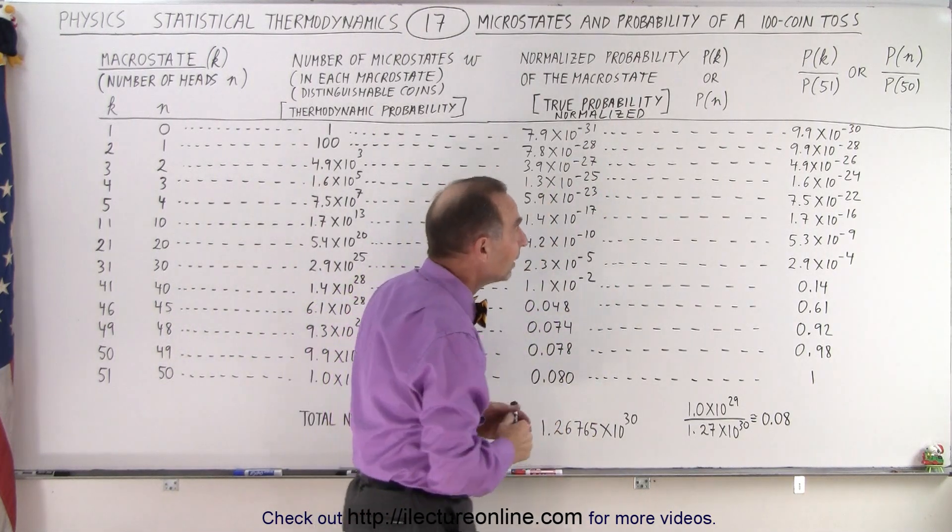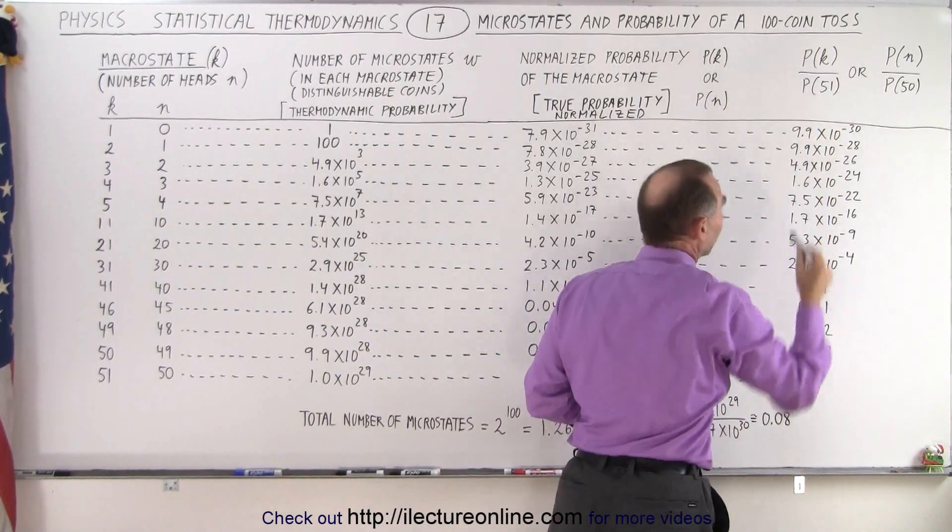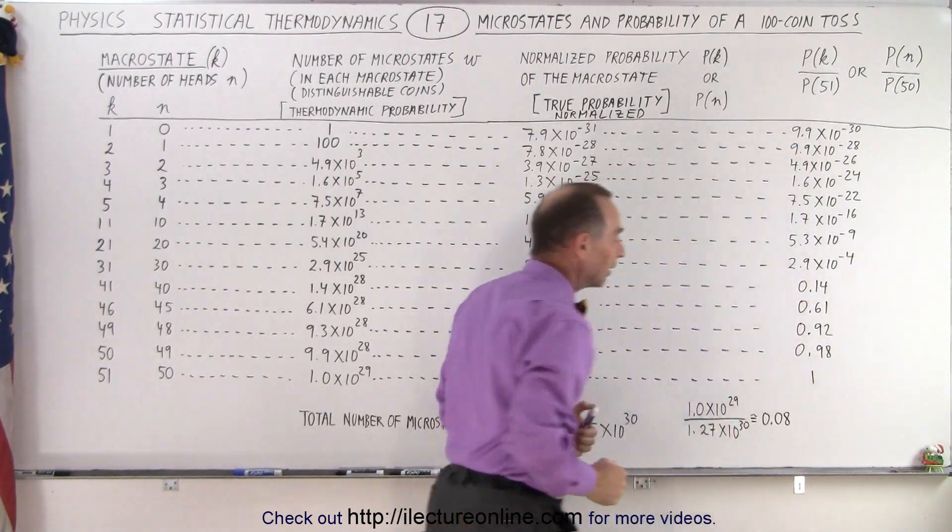so it's relative to 1. And then we can compare the probability of any particular macrostate and divide that by the most probable macrostate. And so you can also look at the probability that way.